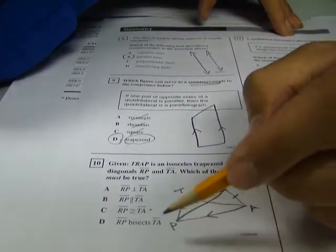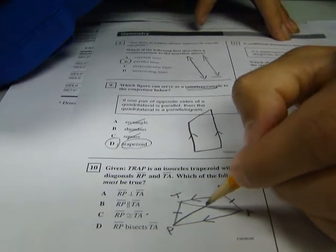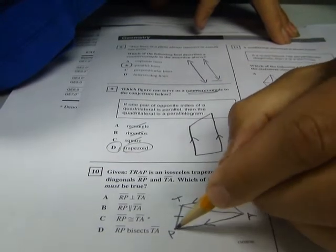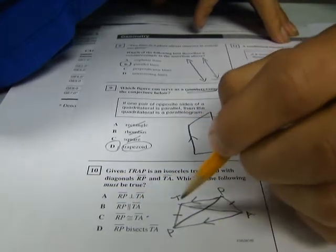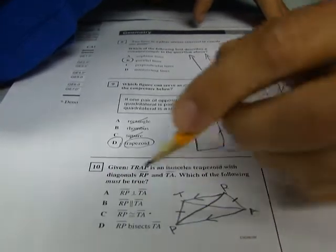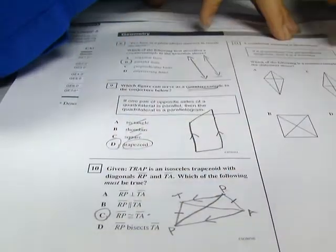RP bisects TA. They're not cutting each other in half. Because if they were, then this segment would be the same length as this segment. So they don't bisect each other. The only thing that is clear is that the two diagonals are congruent. Therefore, C is your answer.